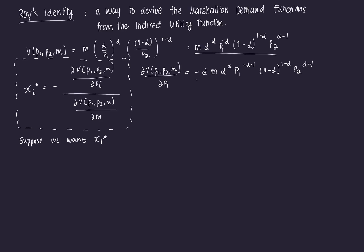Then we need the denominator — the first-order partial derivative of the indirect utility function with respect to income M. That's going to be equal to alpha raised to alpha, P1 raised to negative alpha, times 1 minus alpha raised to 1 minus alpha, times P2 raised to alpha minus 1. So we have those two forms.